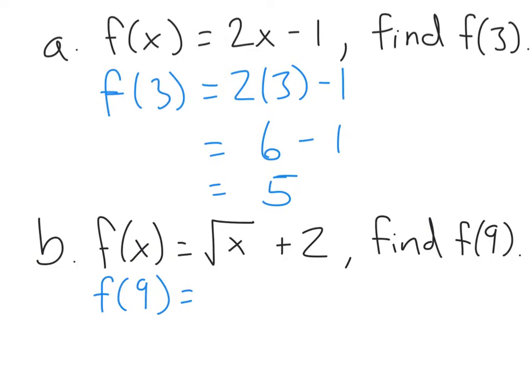We could say that when the input is 3, the output is 5. If we want to think of this as a graph, we could write this as a point: (3, 5). Because your inputs are like x's — we inputted 3 — and your outputs are like y's — we outputted 5.